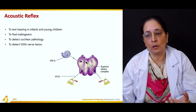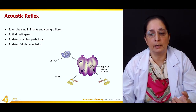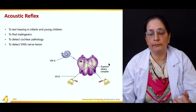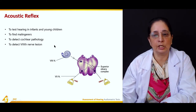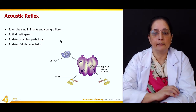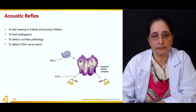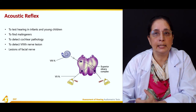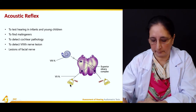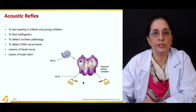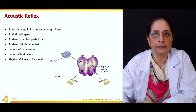The acoustic reflex is used to identify pathology at the level of the cochlea, the eighth cranial nerve, the facial nerve (seventh cranial nerve), the superior olivary complex, the brainstem, and the auditory cortex. It also helps assess the volume of the ear canal.